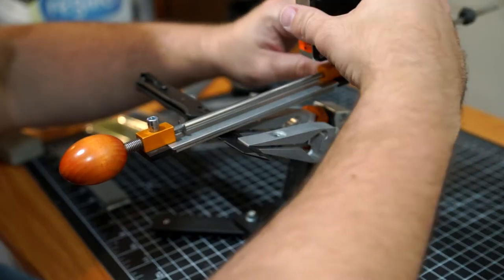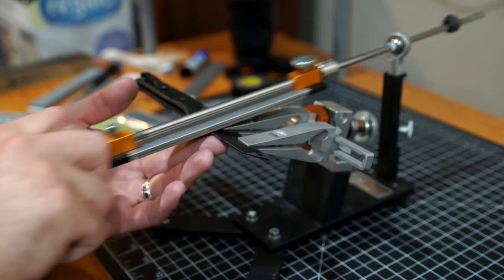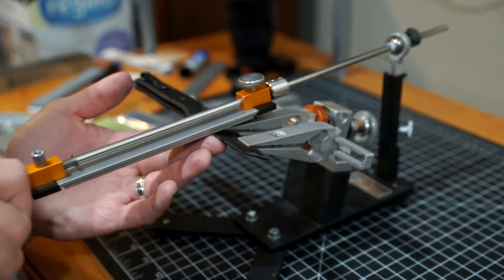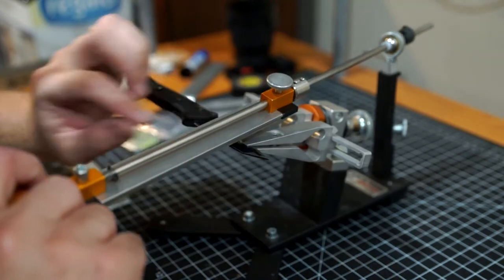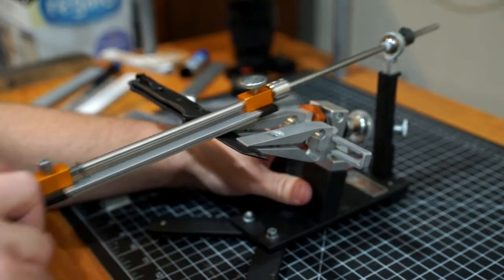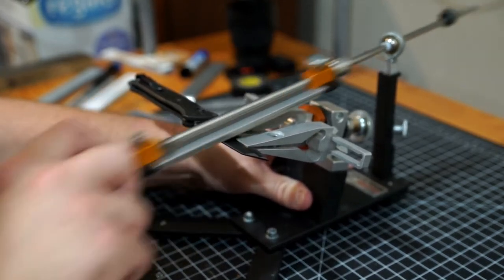The Edge Pro diamonds are good for stock removal and reprofiling. They're not as good in my opinion for the finer grits. I like the resin bonded stuff better. But for the coarse grit stuff I like them. They're very reasonably priced and they last quite a while.